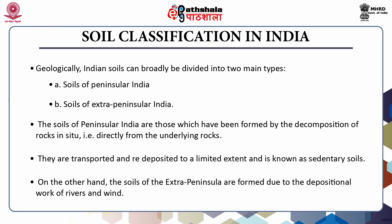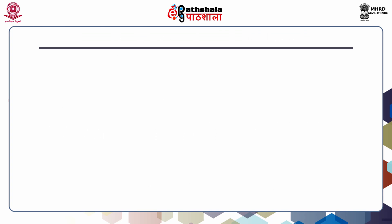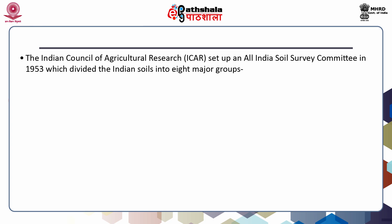On the other hand, the soils of extra peninsular India are formed due to the depositional work of rivers and wind. They are mainly found in the river valleys and deltas, are very deep and constitute some of the most fertile tracts of the country. They are often referred to as transported or regional soils. The Indian Council of Agriculture Research set up the All India Soil Survey Committee in 1953, which divided the Indian soil into eight major groups.